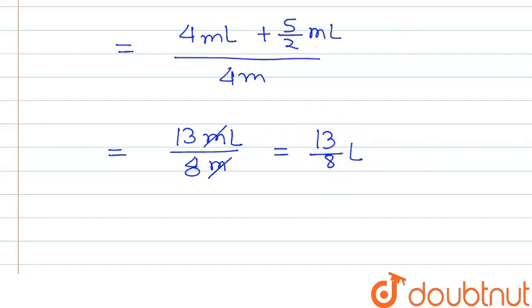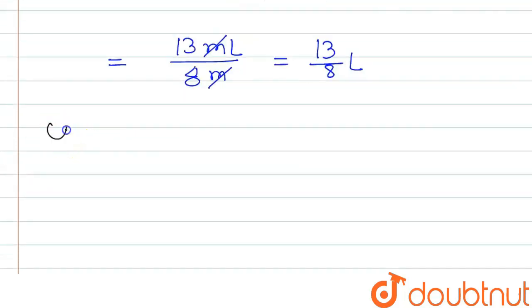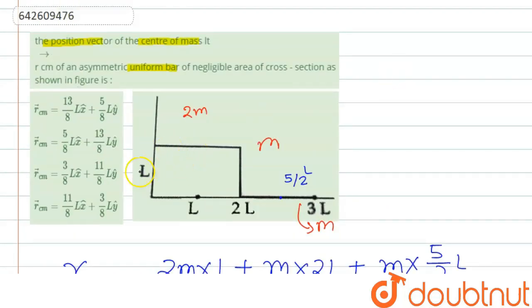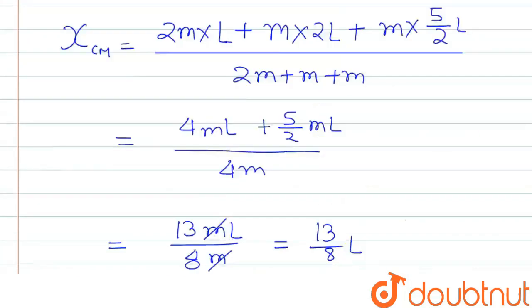Now we will find for Y. Again for Y we will write the mass, that is 2M for first bar, and the distance from the origin. We can see the middle point of this bar will be at a distance from the origin of L, so we can write L.